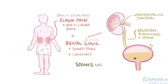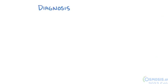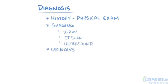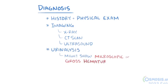Stones that are less than 5 mm across are usually passed within hours. Diagnosis involves a history and physical exam, as well as imaging studies like x-ray, CT scans, or ultrasound, and finally a urinalysis because it might show microscopic or gross hematuria, which means blood in the urine.